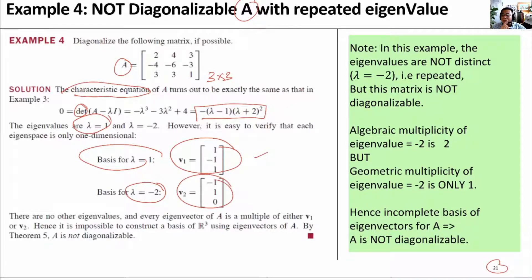we can only find one eigenvector, even though the eigenvalue is repeated.